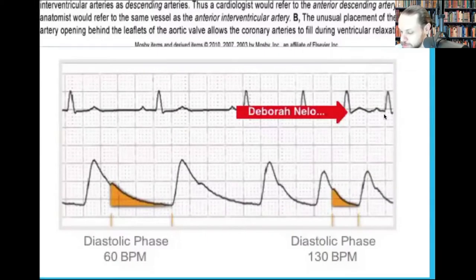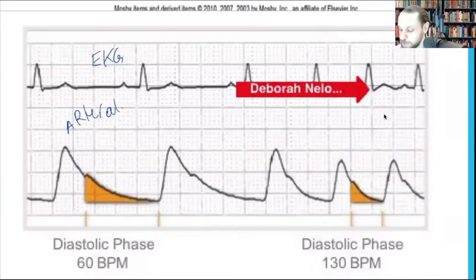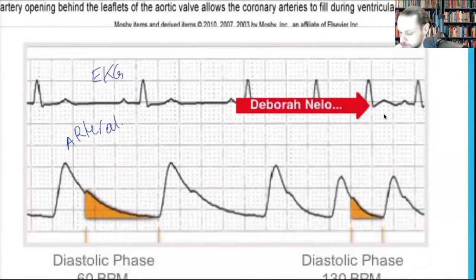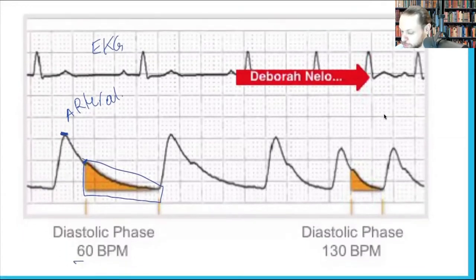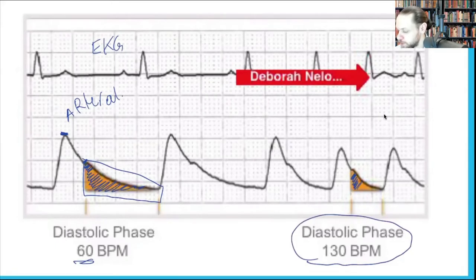This is the EKG at the top and this is your arterial waveform. The waveform shows systole, where diastole starts, and the diastolic phase. At a heart rate of 60 beats per minute, look at how much time is spent in diastole — versus when the heart rate becomes 130.